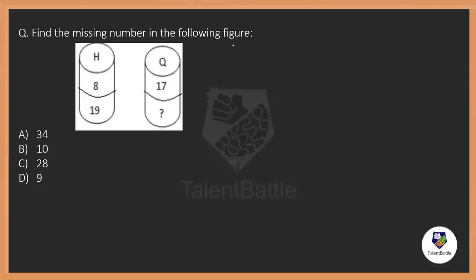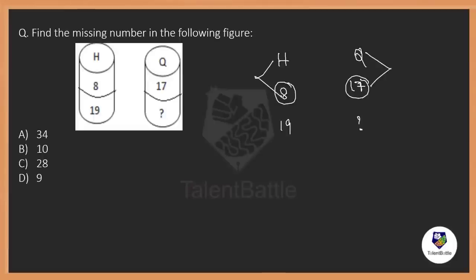Find the missing number in the following figure. They gave a figure with H, 8, 19 and Q, 17, and a question mark. The alphabetical number for H is 8 — that is correct. The alphabetical number for Q is 17 — this is fine. But how do we find the third number? If you check the difference, 19 minus 8 is 11, and 17 plus 11 would be 28. But that is not exactly the logic they have applied here.